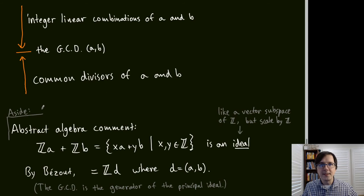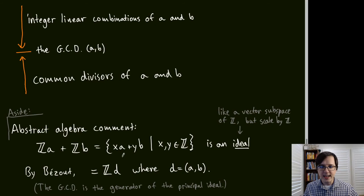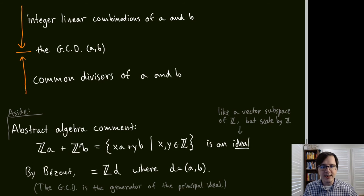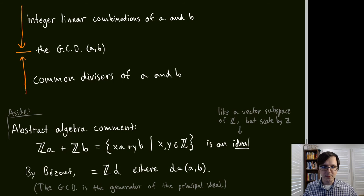An algebraic aside for those with abstract algebra background: the set of all integer linear combinations of A and B, written ZA + ZB, is an ideal — like a vector subspace of ℤ adapted for rings. The proof of Bézout's identity shows this ideal equals ZD where D = gcd(A, B), meaning D is the generator of this principal ideal.